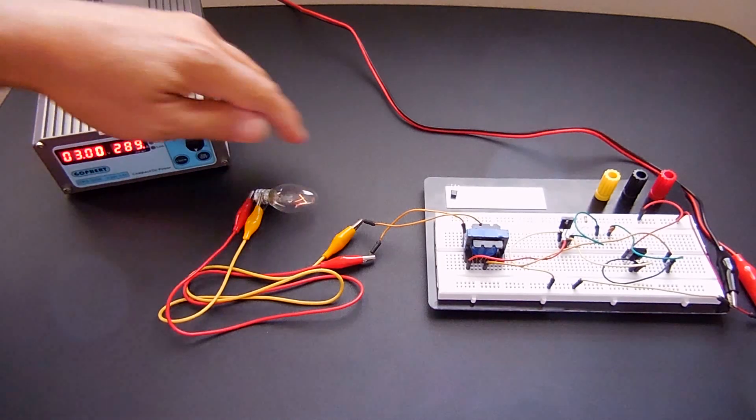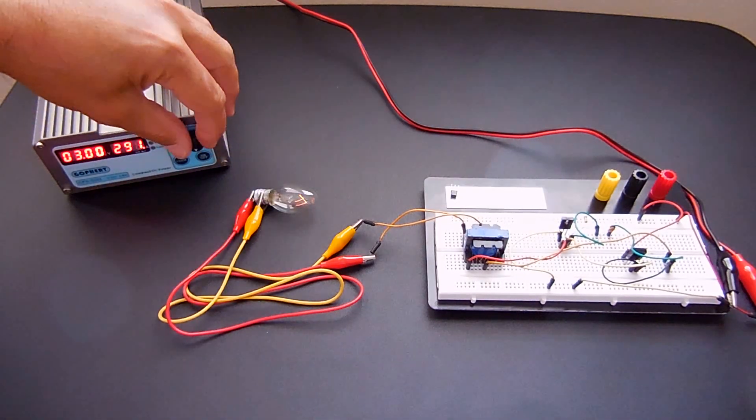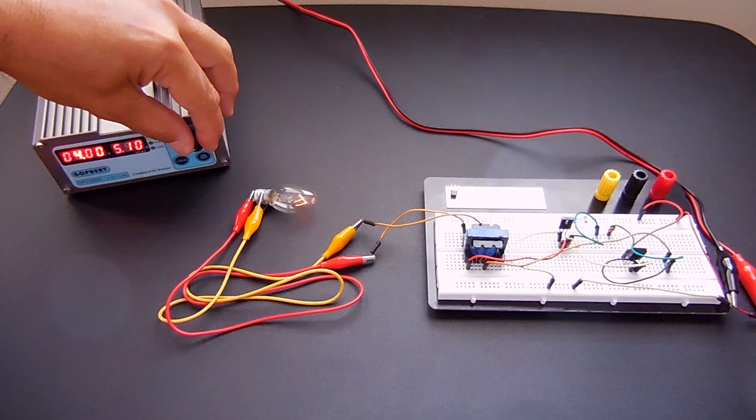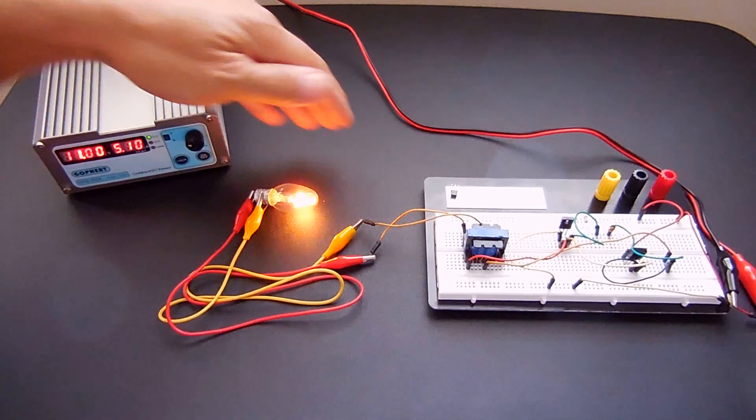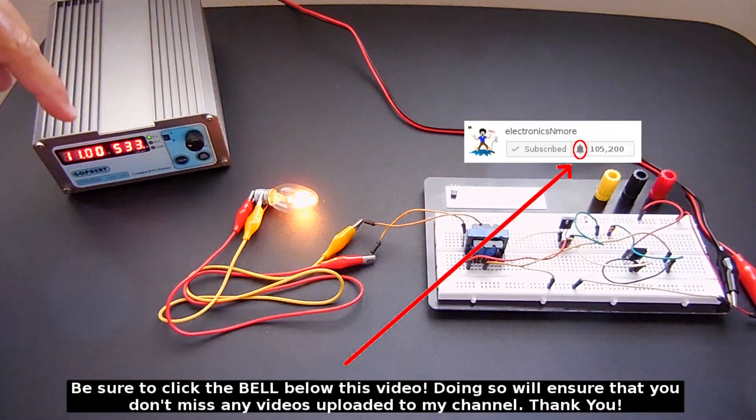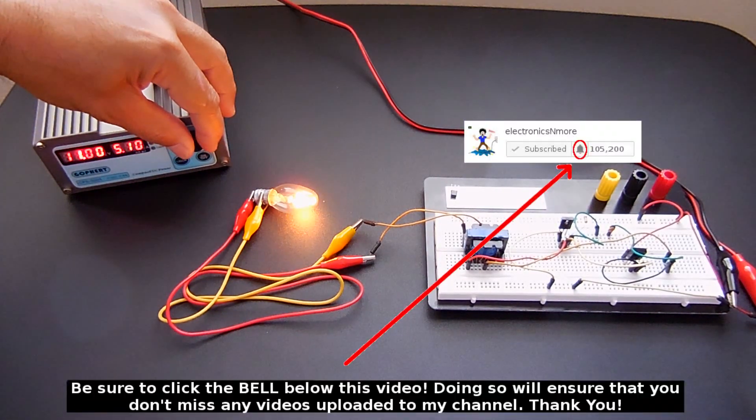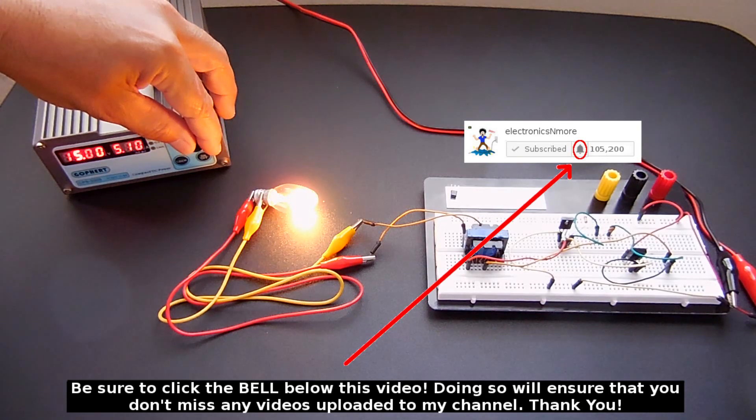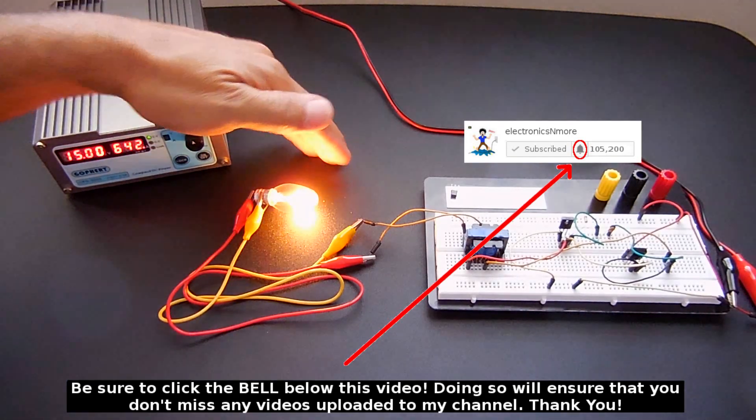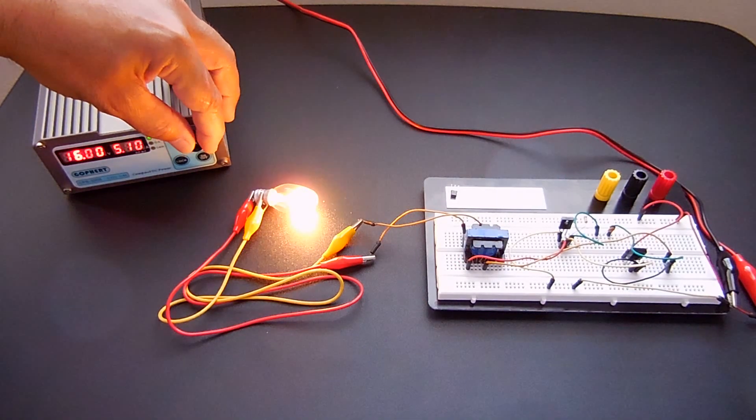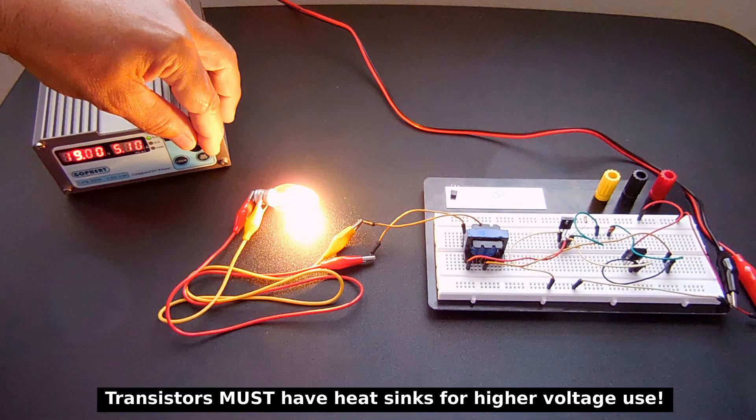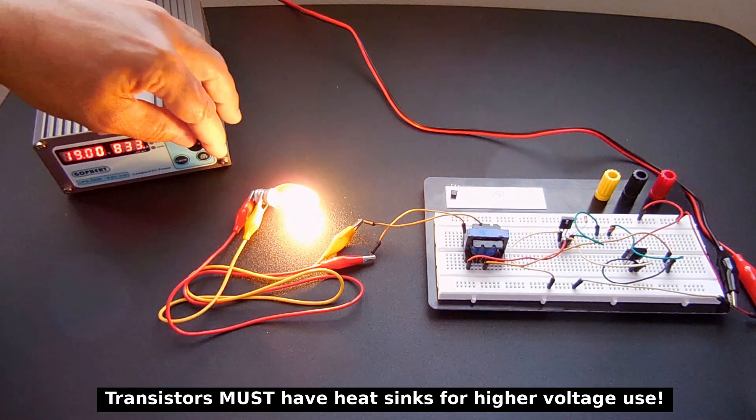3 volts starting to come on. 4. That's 10 volts. Right there is probably where it normally would run. That's over a half of an amp. Probably right there would be about right. 15 volts, 650 milliamps. Pretty bright right there. And we're at 830.